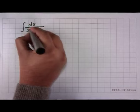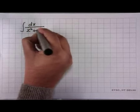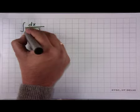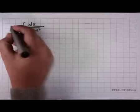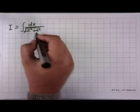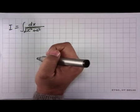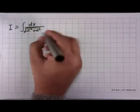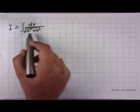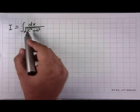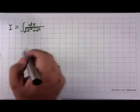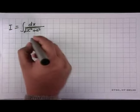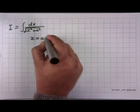Next we consider another example: the integral dx/√(x²+a²). Can we use the same technique as the previous case? Let us see what happens if we substitute x = a·tan(t) here as well.